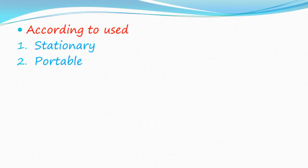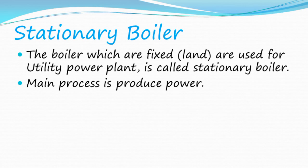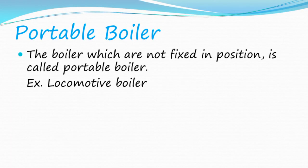Classification according to use: stationary and portable. A stationary boiler is fixed in position and used for utility power plants — its main purpose is to produce power. A portable boiler is not fixed in position. Example: Locomotive boiler.